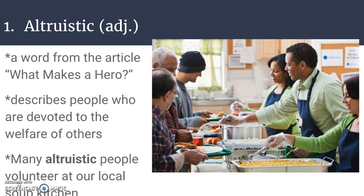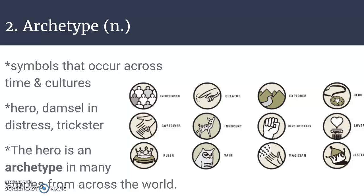Our first word is altruistic, which is an adjective. The definition for altruistic is unselfishly concerned for or devoted to the welfare of others. This is a word that was also in the article 'What Makes a Hero?' It was just used as altruism, as a noun, but we have altruistic to describe people who are devoted to the welfare of others. Many altruistic people volunteer at our local soup kitchen.